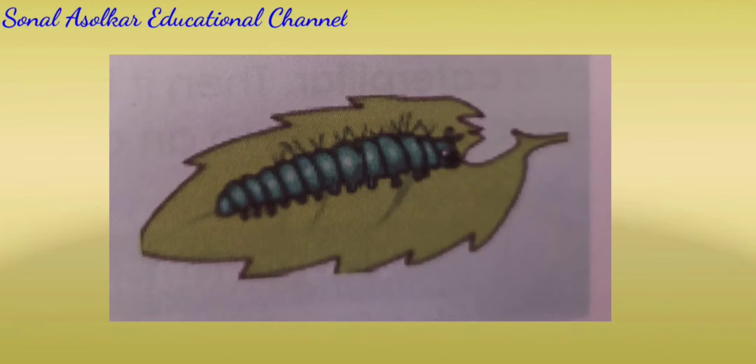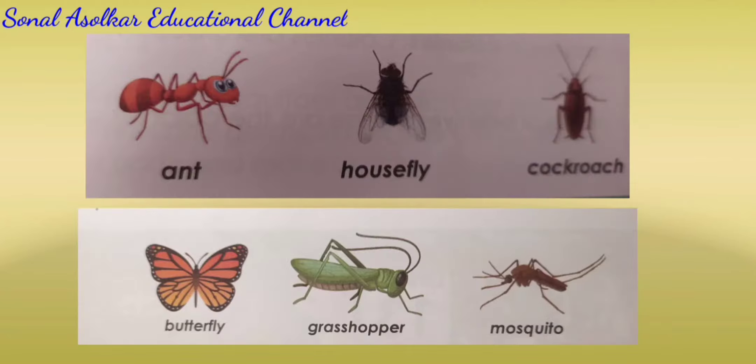So first point is the thinking. Rajat found a small green creeping animal on a leaf in the garden. He wants to know about that animal. Do you know its name? It is a caterpillar. The small creeping animal Rajat found in his garden is a caterpillar. It has many legs.